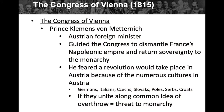At the Congress of Vienna, Prince Clemens von Metternich was the Austrian foreign minister. He guided the Congress to dismantle France's Napoleonic empire and return sovereignty to the monarchies of the invaded lands. He feared revolution in Austria because of the numerous cultures there — Germans, Italians, Czechs, Slovaks, Poles, Serbs, Croats — a lot of different national backgrounds. If they united around the idea of overthrow or revolution, that would be a threat to the monarchy, so Prince Clemens was very concerned.